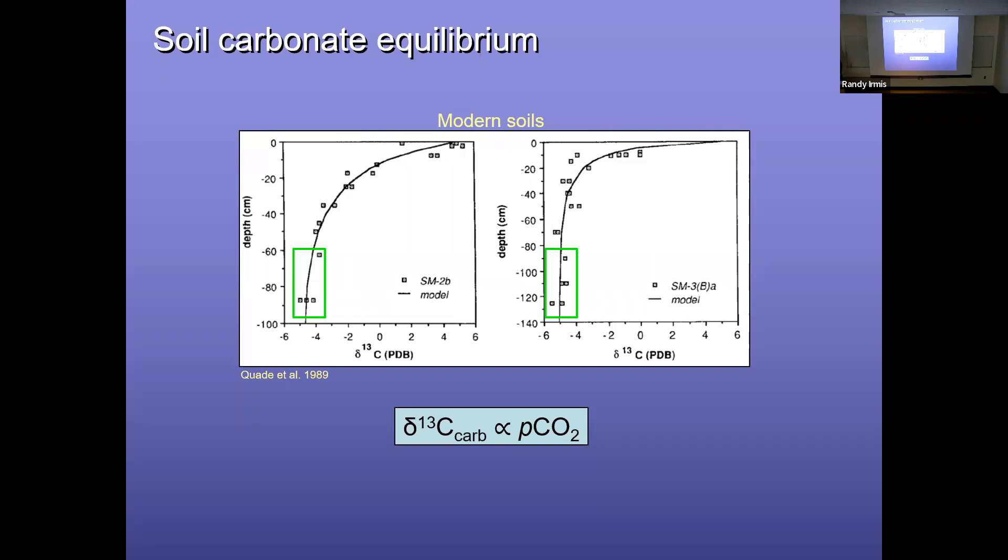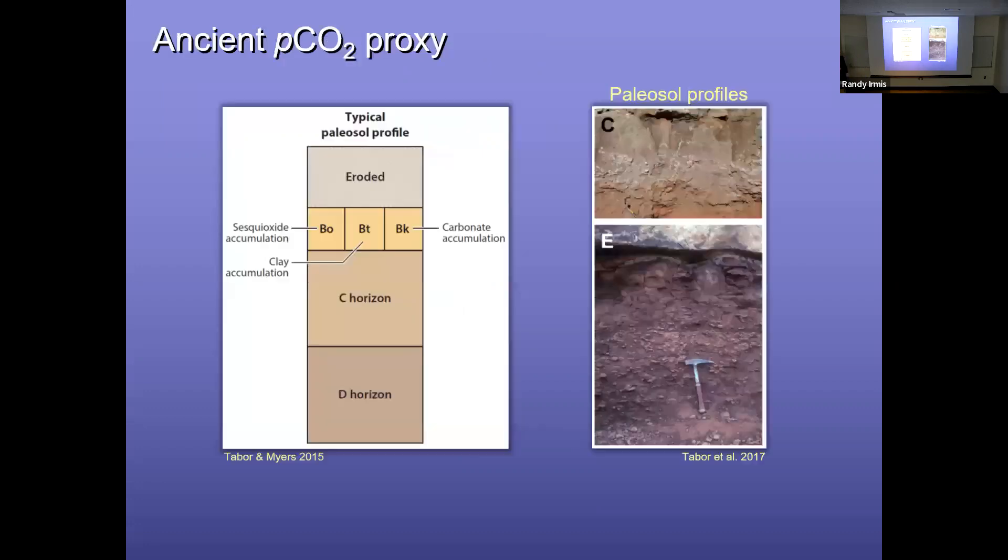So this is great because this potentially allows us in paleosols in ancient soils to measure the isotopic values of these carbonates. And we also need to measure the isotopic value of organic matter. And with those two key things, we can then estimate the partial pressure of carbon dioxide in the atmosphere in the past, which is awesome. So, as I mentioned earlier, often we've got the A horizon has been removed from erosion, paleo erosion, but we do get carbonate accumulation in the B horizon here.